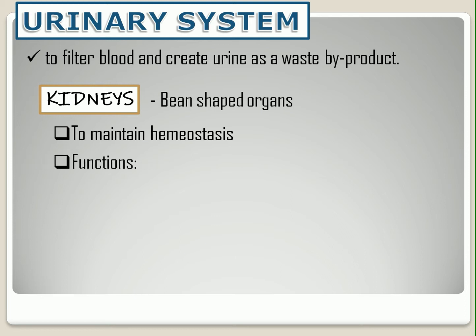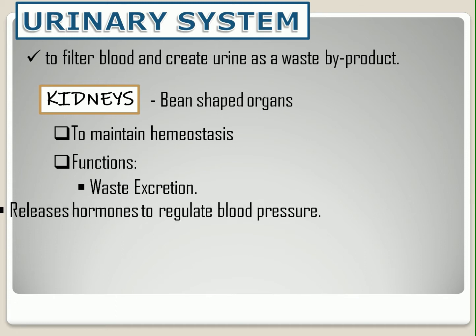First, we have waste excretion. The kidneys filter waste products from food, medications, and toxic substances. Two major compounds that the kidneys remove are urea and uric acid. Urea is the result from the breakdown of proteins, while uric acid is from the breakdown of nucleic acid.